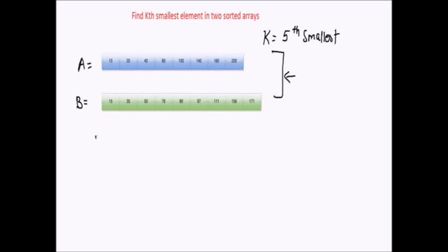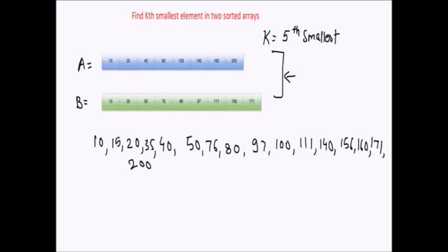We know that to merge two sorted arrays uses the merge operation of merge sort. If I merge these two arrays, the output will be a single sorted array. To find the fifth smallest element in this example, I count from 1, 2, 3, 4, and 5. This is my fifth smallest element, which comes from array A.